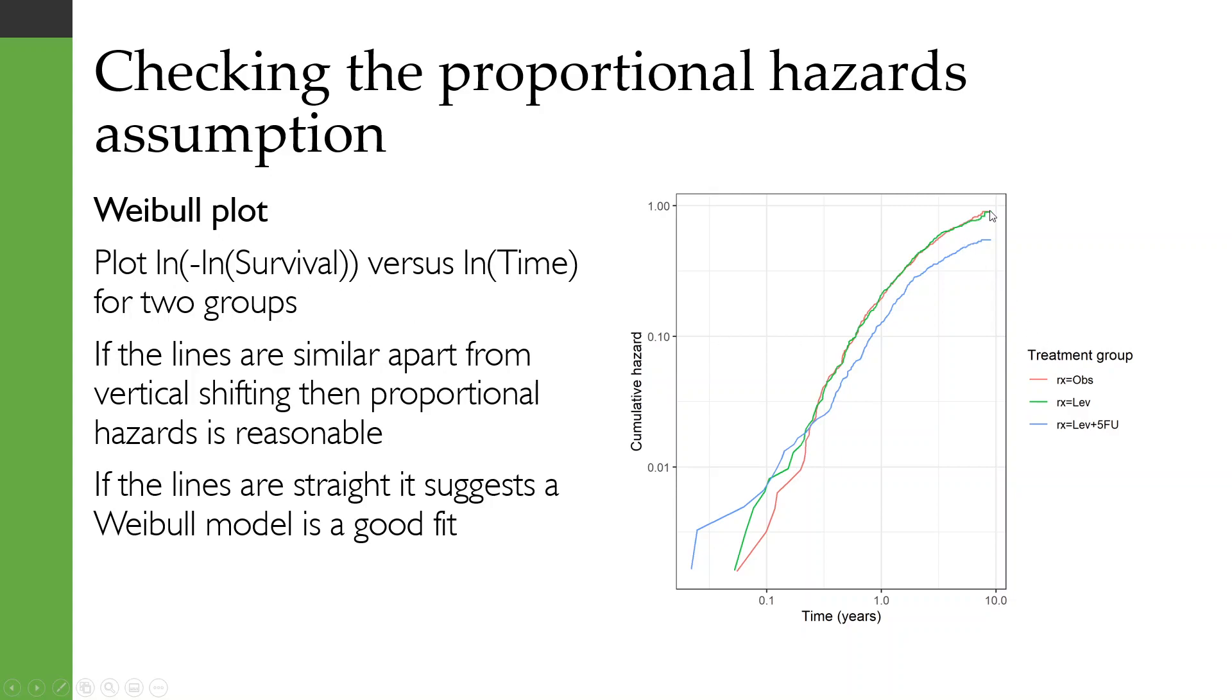I've said here for two groups, in this case we actually have three groups, but you'll quite often only have two. If the lines that you get on this plot are similar apart from some amount of vertical shifting, then proportional hazards is reasonable. That's because if your cumulative hazard is multiplied by the same number over time, then the log cumulative hazard is just shifted by a constant over that period of time.